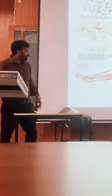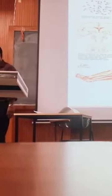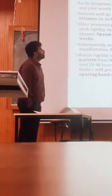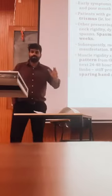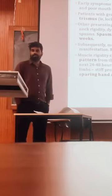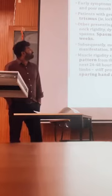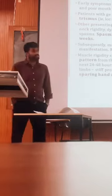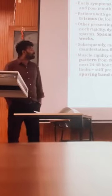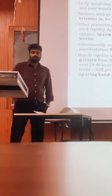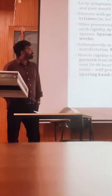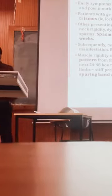There is a classic triad presenting in a patient with tetanus: rigidity, spasm, and autonomic dysfunction. Autonomic dysfunction can be seen in severe cases. Early symptoms include restlessness and sore throat. Most cases are generalized tetanus, presenting with trismus — also called lockjaw. Spasm usually continues for three to four weeks. There are various types of tetanus and most commonly generalized tetanus presents with trismus.